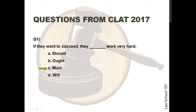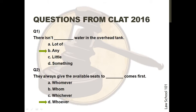Now questions from CLAT 2016 will be discussed; there were quite a few in this paper. Question 1: 'There isn't ___ water in the overhead tank.' The correct option is B, 'any'. No other option is grammatically correct. Question 2: 'They always give the availability to ___ comes first.' The correct option is D, 'whoever'. This question is a little tricky. Whomever and whom are object pronouns — they would ideally replace him, her, etc. in a sentence. Who and whoever are subject pronouns — they would replace he, she, etc. In this case, we need a subject pronoun. You can determine whether to use a subject or object pronoun by substituting 'he' and 'him' in the sentence. Clearly here, 'he' would be used, which means a subject pronoun is required.